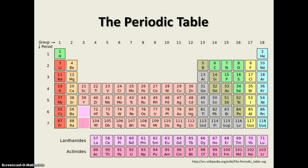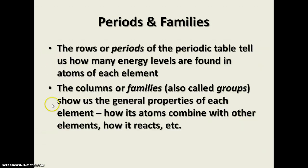There are a total of seven rows or periods and 18 columns or groups. Sometimes the columns are called families instead of groups. I vary back and forth between one and the other. You might hear me refer to it as a group in one sentence and a family in the other but they mean the same thing. The periods are the rows. The periods tell us how many energy levels are found in the atoms of each element. The electrons orbit around the nucleus in various energy levels and so the rows or the periods tell us how many energy levels there are whether there's one or three or seven.